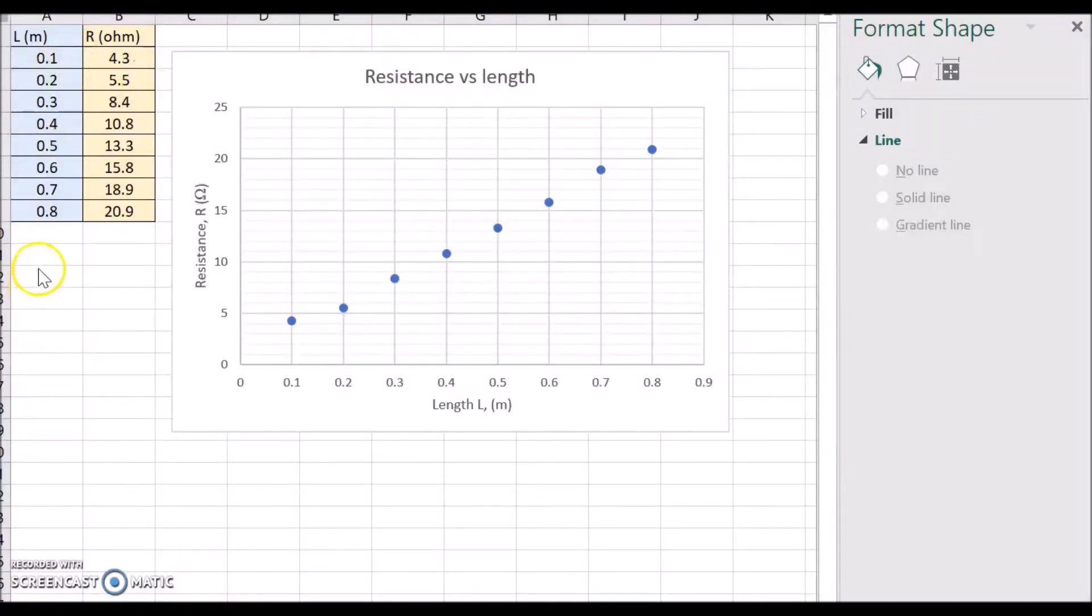Here's the data from the video you've just seen. There's the length of the nichrome wire and the resistance values that I said all the way through. I've already plotted that and you can see on this graph it's a scatter plot with length along the bottom and resistance up the side.